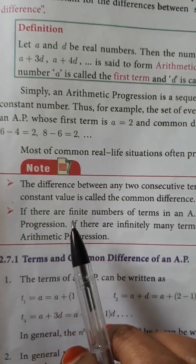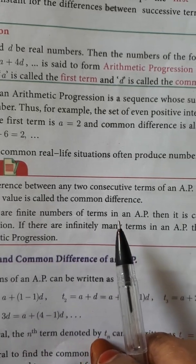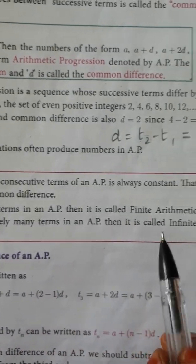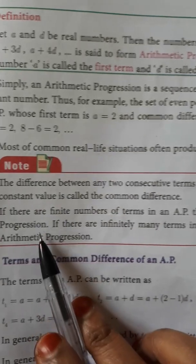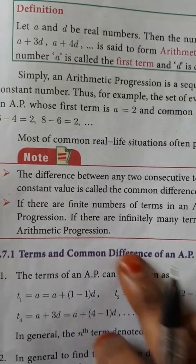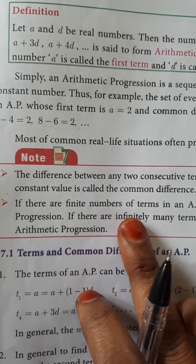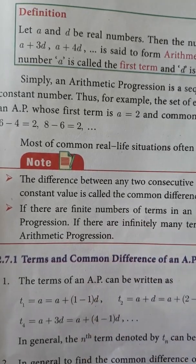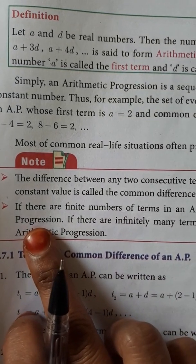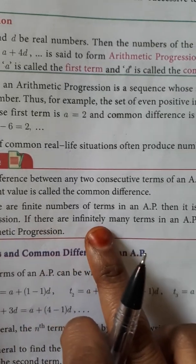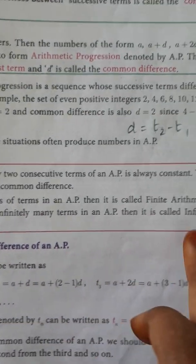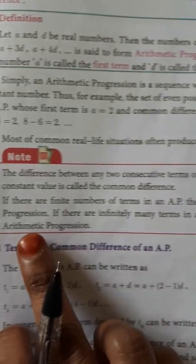If there are a finite number of terms in an AP, then it is called a finite arithmetic progression — the last term is known. If there are infinitely many terms in an AP, then it is called an infinite arithmetic progression.